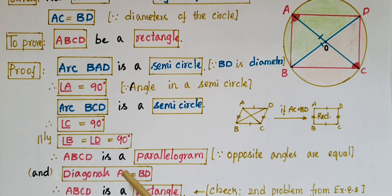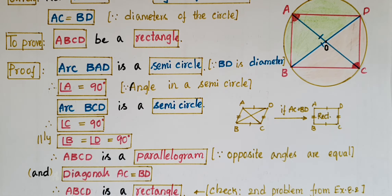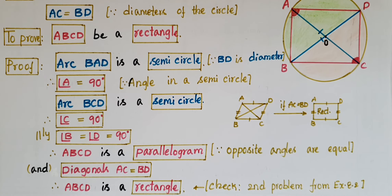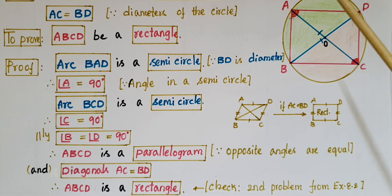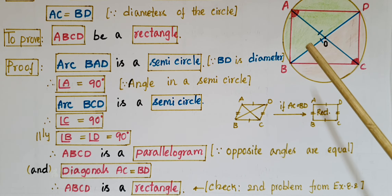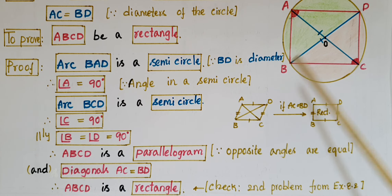And diagonals AC is equal to BD — this is already given in the problem. So, if a parallelogram has equal diagonals, then we can say that it is a rectangle, so ABCD is a rectangle. Also, in this parallelogram each angle is 90 degrees, so that is also a rectangle.